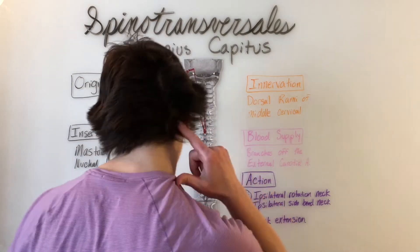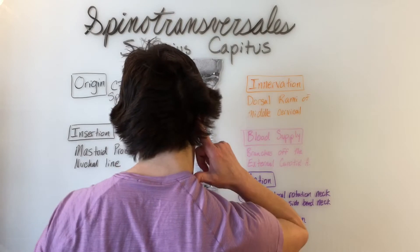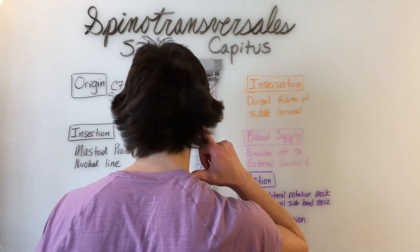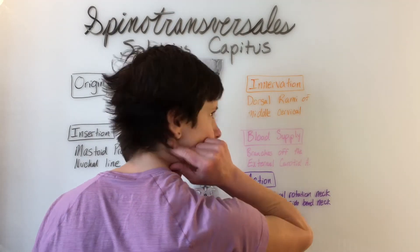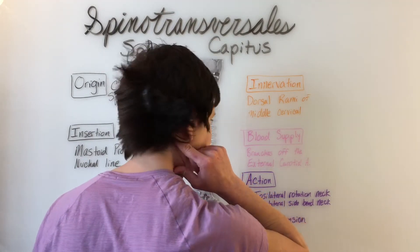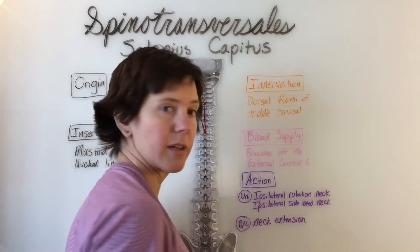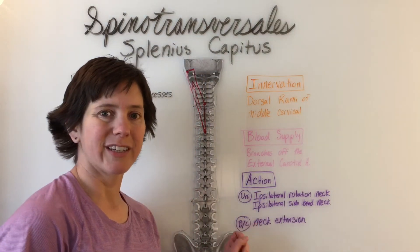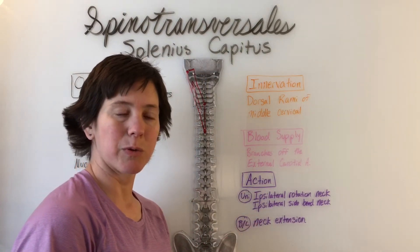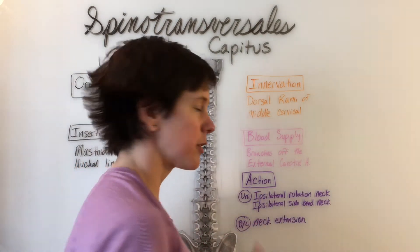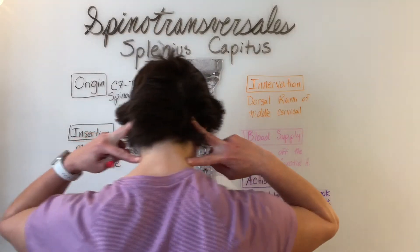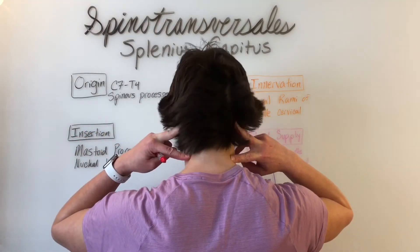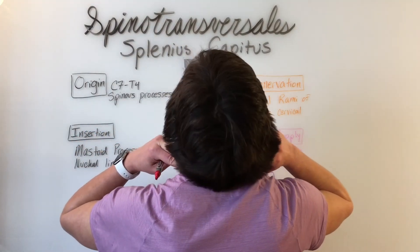So same-sided side bend and rotation, and also bilaterally this muscle will perform neck extension — both sides working together produce neck extension.